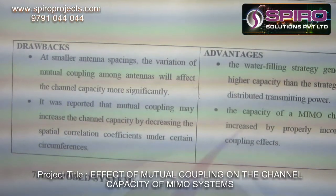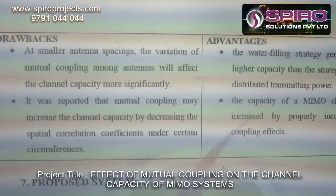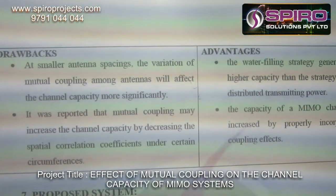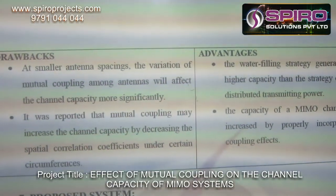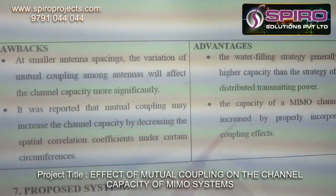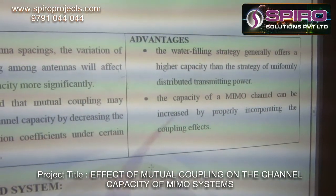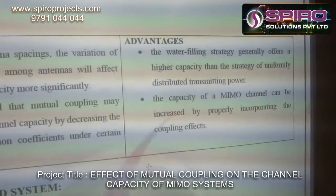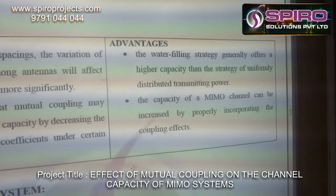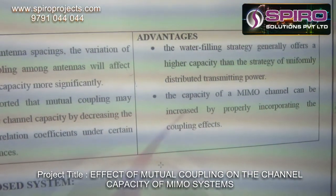The drawbacks of the existing system: at smaller antenna spacing, the variation of mutual coupling among antennas will affect the channel capacity more significantly, and mutual coupling may increase the channel capacity by decreasing the spatial correlation coefficients under certain circumstances. The advantages of the proposed system: the water-filling strategy generally offers a higher capacity than the strategy of uniformly distributed transmitting power, and the capacity of a MIMO channel can be increased by properly incorporating the coupling effects.